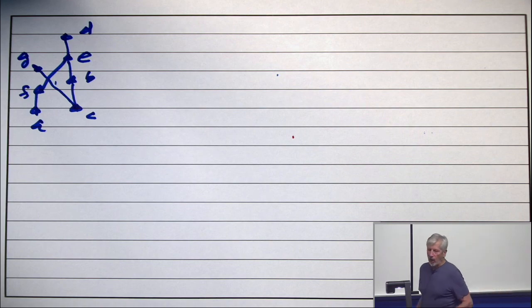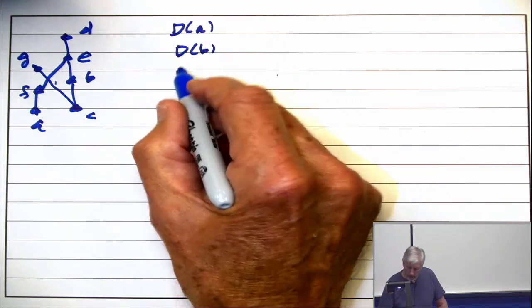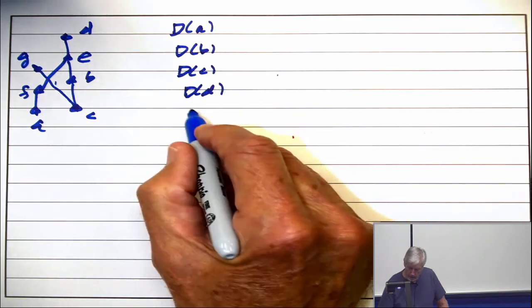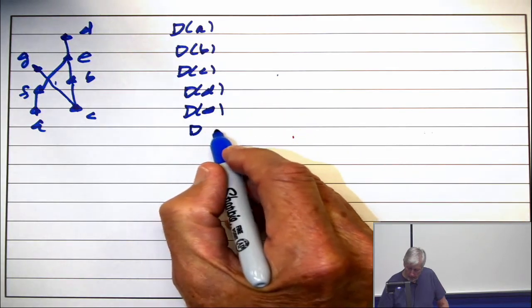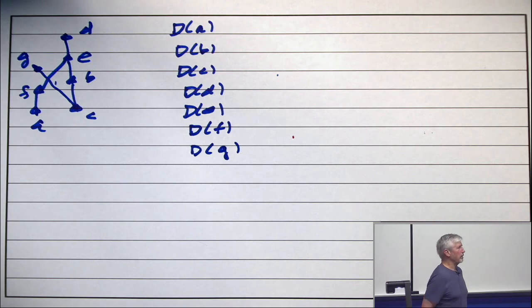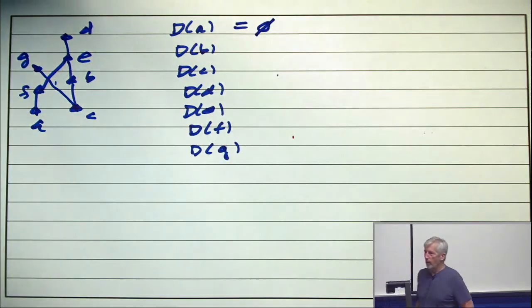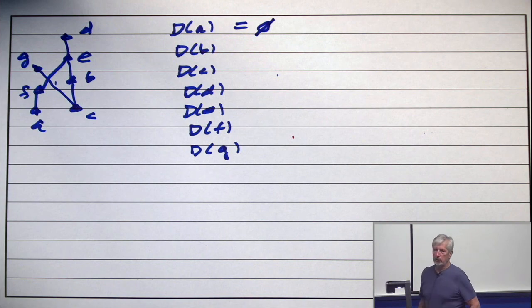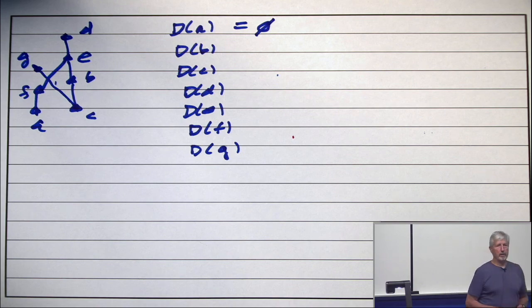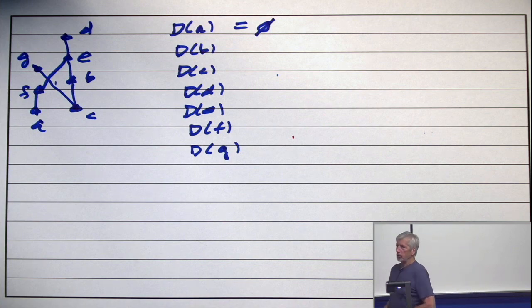So we begin the algorithm by recording all the down sets. I'm going to write down from A, down from B, down from C, down from D, down from E, down from F, and down from G. All right? To show you how bold and fearless I am, I'm going to do down from A. There's nobody down from A. You do the others.